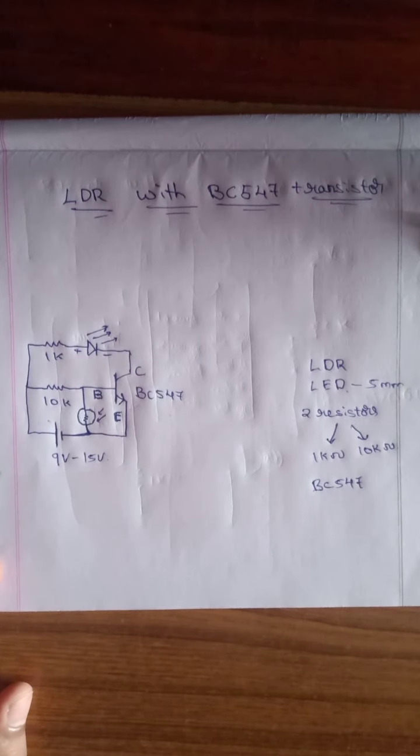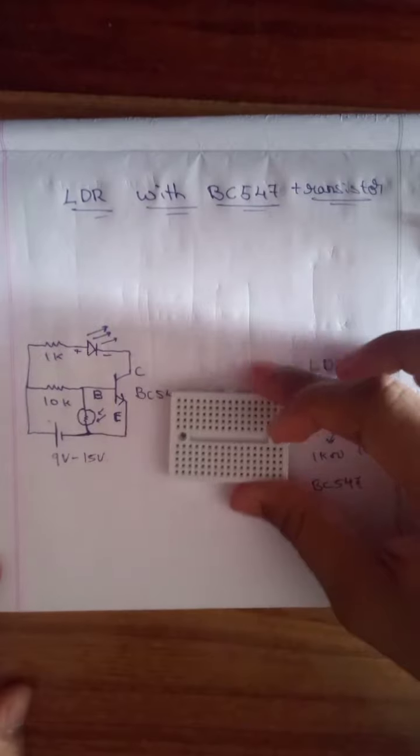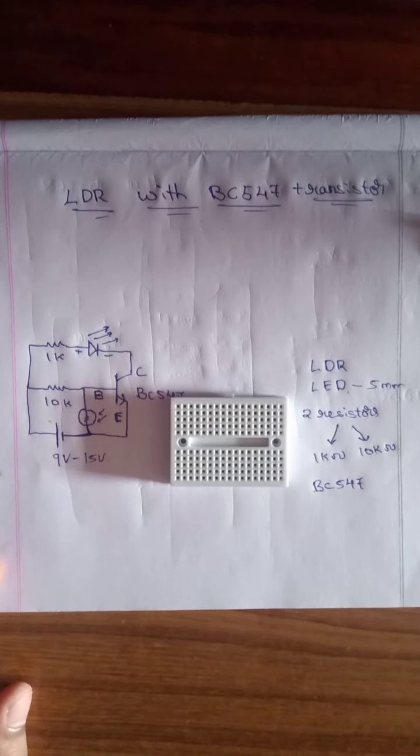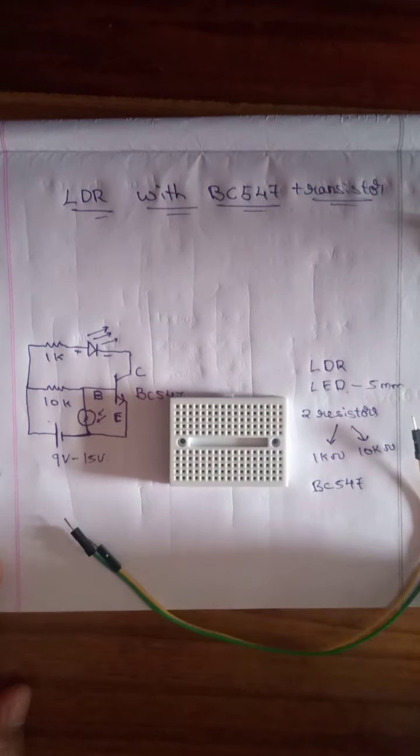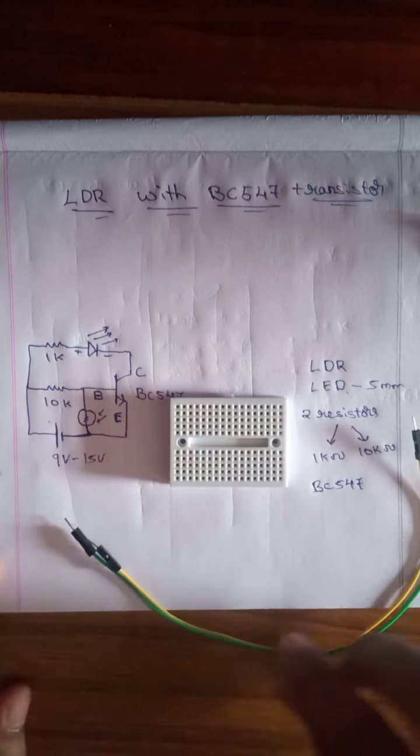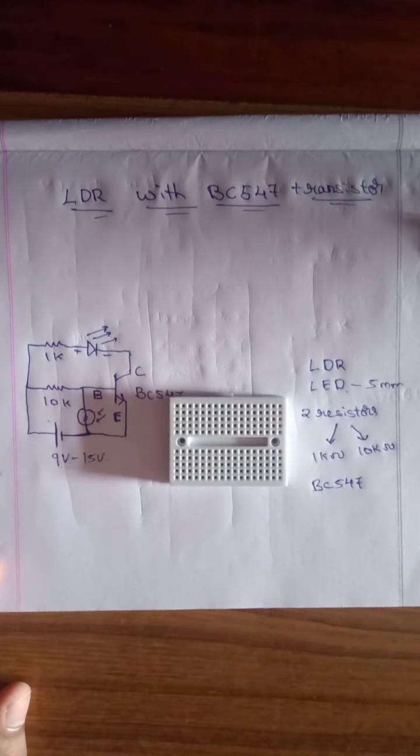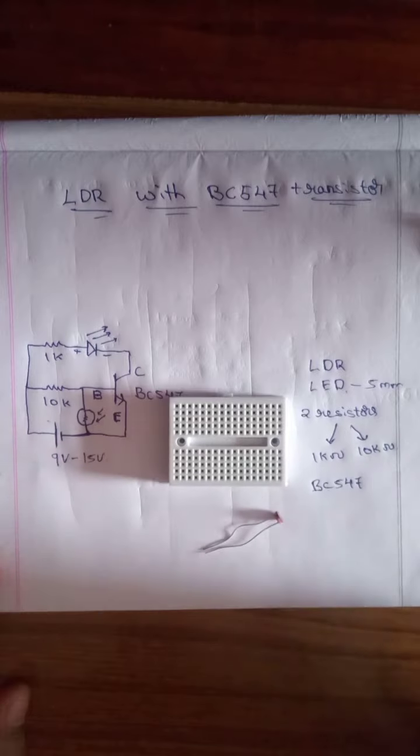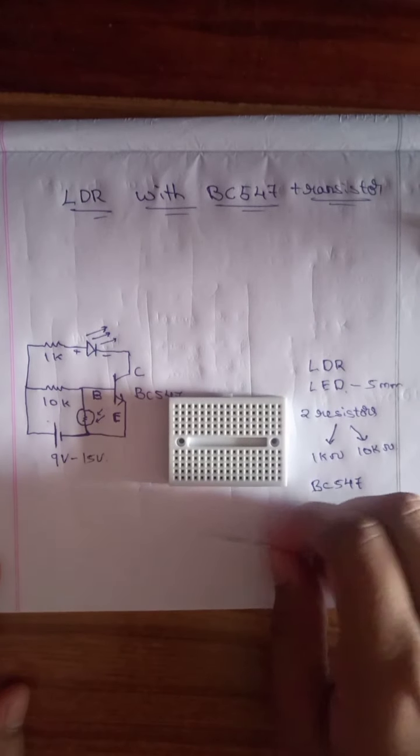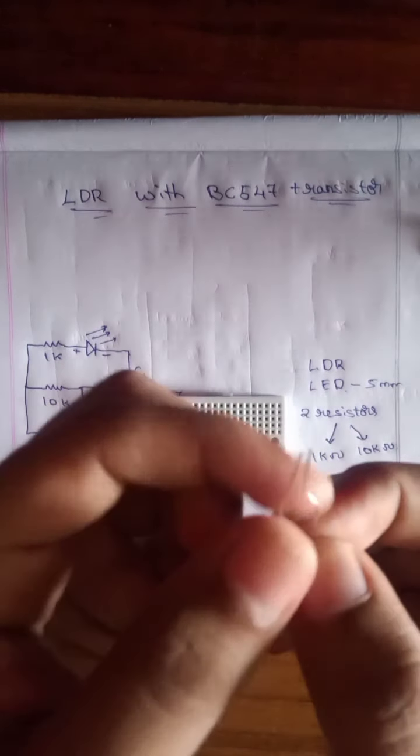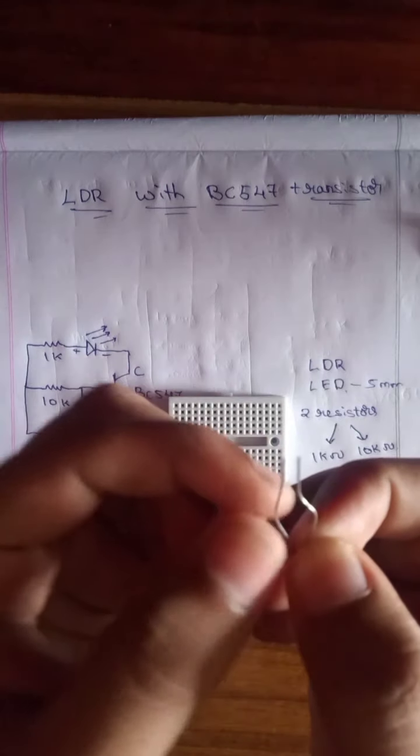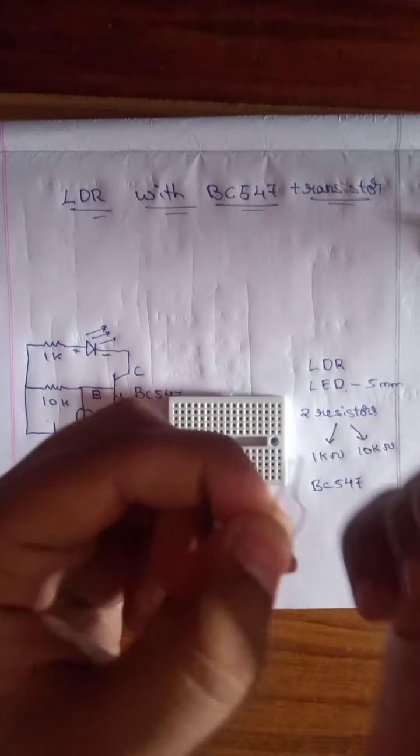Let me show the components. A breadboard for the connection, two jumper wires for giving the source. This is LDR. Note that LDR does not have polarities. You can use this as negative or positive. Similarly, this one as negative or positive.